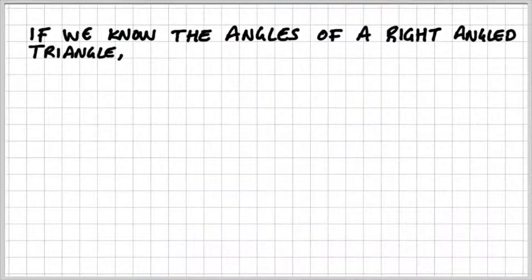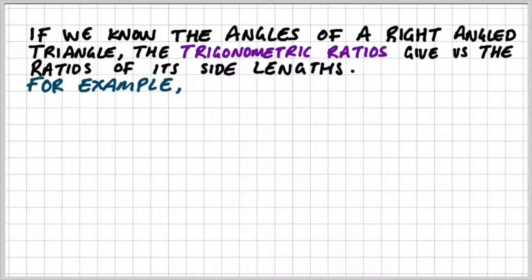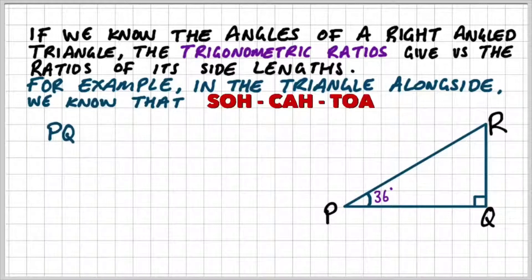If we know the angles of a right angle triangle, the trig ratios give us the ratios of its side lengths. For example, let's say we have this triangle PQR and we have an angle 36 degrees.